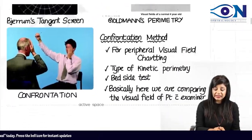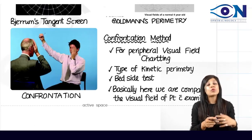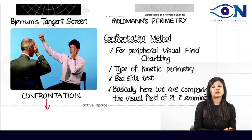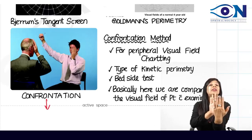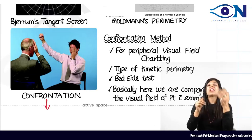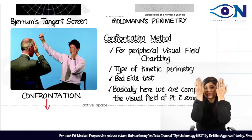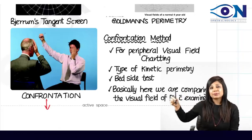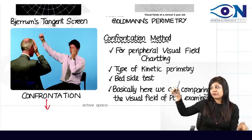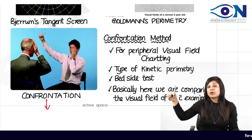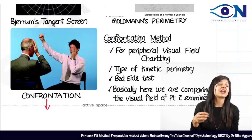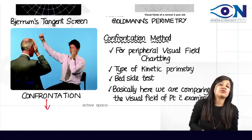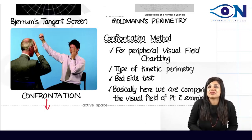The bedside clinical method for perimetry is the confrontation method. The patient and observer sit facing each other with knees in line. The patient covers one eye while the doctor holds an object between them and brings it from the periphery toward the center. Because the object moves, this is a form of dynamic perimetry, as opposed to static perimetry where the object remains stationary.